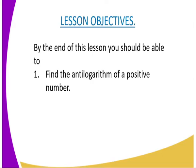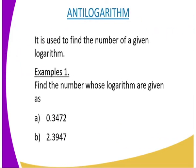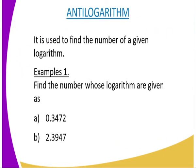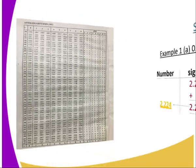By the end of this lesson, you should be able to find the anti-logarithm of a positive number. The anti-logarithm is used to find the number corresponding to a given logarithm. Example one: find the number whose logarithms are given as (a) 0.3472 and (b) 2.3947.